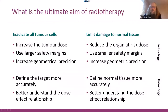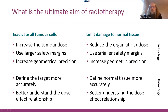The ultimate aim of radiotherapy is, first, to eradicate all tumor cells — you can do this by increasing the tumor dose using larger margins, treating more of the patient. But you also want to increase geometrical precision to limit damage to normal tissues, reducing organ dose and using smaller, safer margins. In terms of knowledge, you need to define your target accurately and understand the dose-effect relationship.